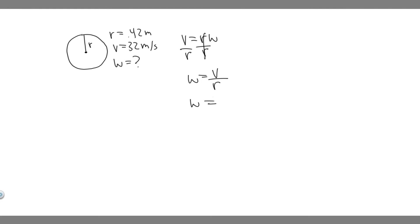So omega equals the velocity, in this case it's 32 divided by 0.42. So when you do 32 divided by 0.42, you'll get 76.1904.